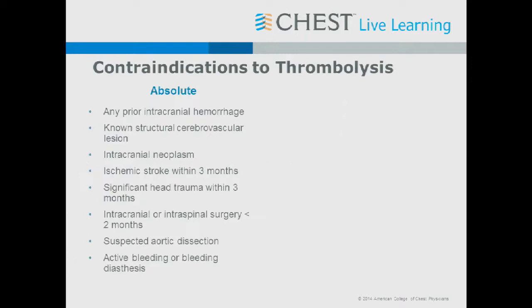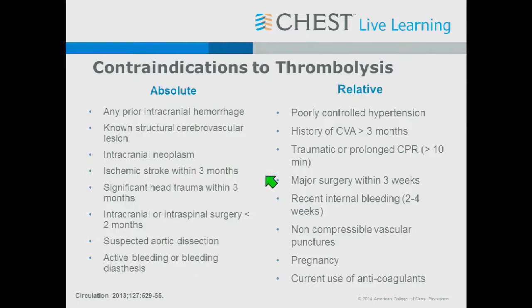Contraindications to thrombolysis are important to know. Absolute contraindications include any prior intracranial hemorrhage, known intracranial structural lesions likely to bleed, ischemic stroke within three months, head trauma within three months, intracranial or intraspinal surgery within two months, suspected aortic dissection, or active bleeding diathesis like hemophilia. Relative contraindications include poorly controlled hypertension, history of stroke, traumatic CPR, non-compressible punctures, recent major surgery, pregnancy, and current use of anticoagulants.